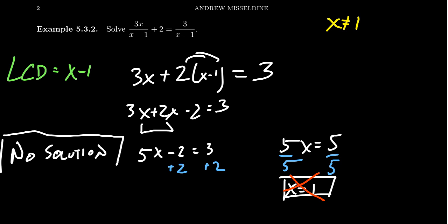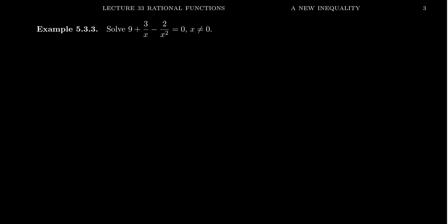We have an inconsistent equation — no solution; the solution set is empty. You might not get a solution to your problem. You must always check the domain. Let's look at a third example: solve 9 plus 3 over x minus 2 over x squared equals 0.